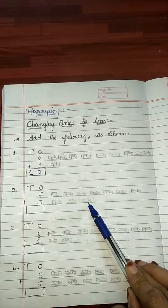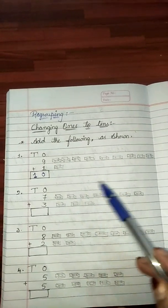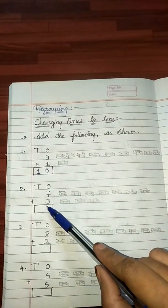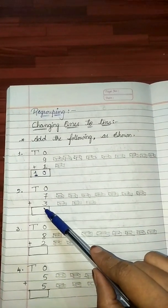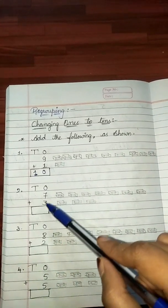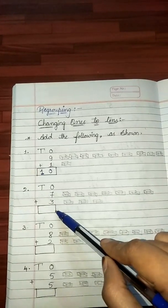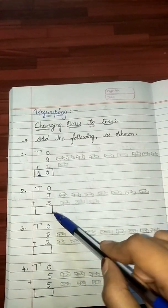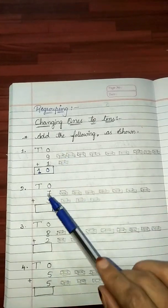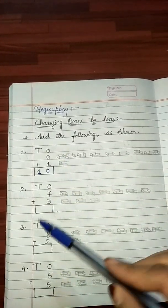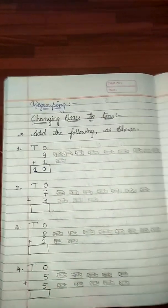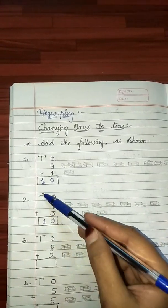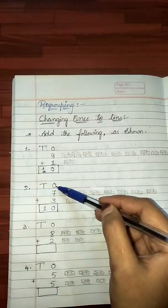Thus, the biggest number that can be written in the ones place is only 9. Thus, we cannot write 10 in the ones column. So, we write 10 ones as 1 ten and 0 ones. Same here, 1 ten, 0 ones.